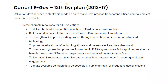Next we have Current E-Government, from the 12th Five Year Plan — that is 2012 to 2017. In this category, the goals are to create shareable resources for all government entities, to deliver both information and transaction-based government services — all government services visible on mobile as well. It also aims to promote ethical use of technology and data, create a safe and secure cyber world, increase all-around awareness, create mechanisms that promote and encourage citizen engagement, and make as much data as possible available in the public domain for productive use by citizens.